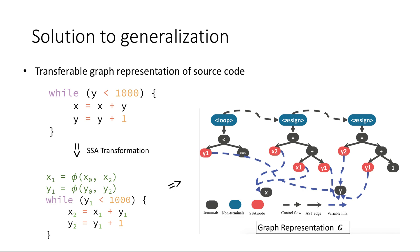The solution for generalization is a graph representation module for source code. By using graph neural networks, we can get a transferable representation for new programs.